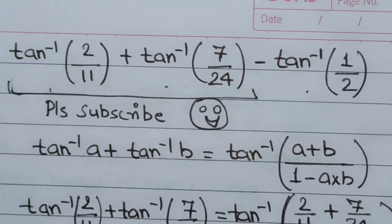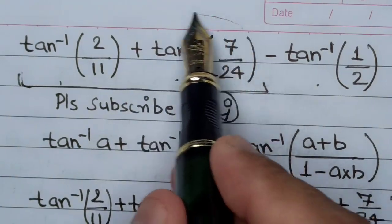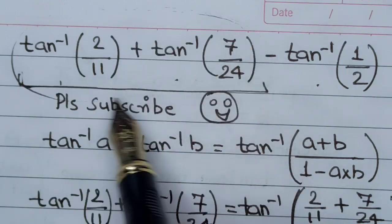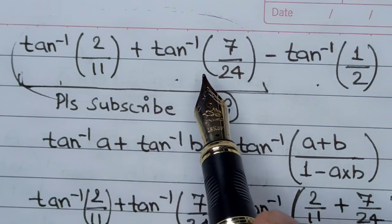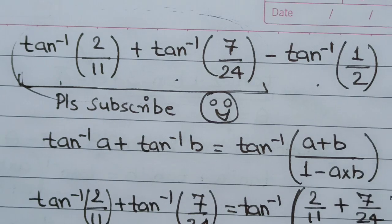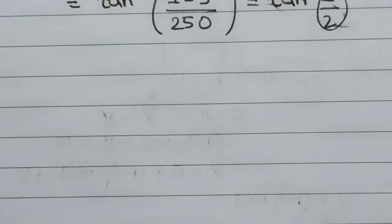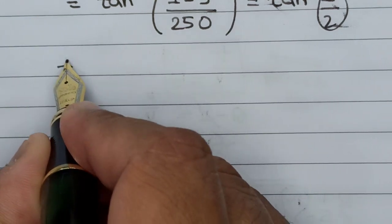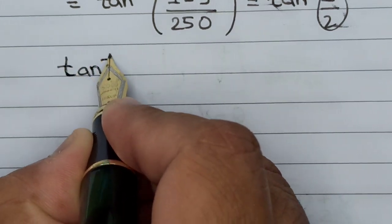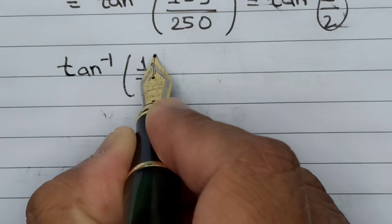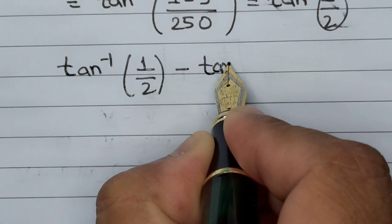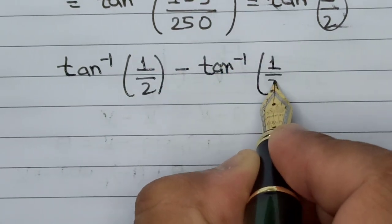So in the initial question itself, on adding these first two terms, we get tan⁻¹(1/2), and the third term is minus tan⁻¹(1/2). This means the problem has now transformed into tan⁻¹(1/2) - tan⁻¹(1/2), so the final answer is 0.